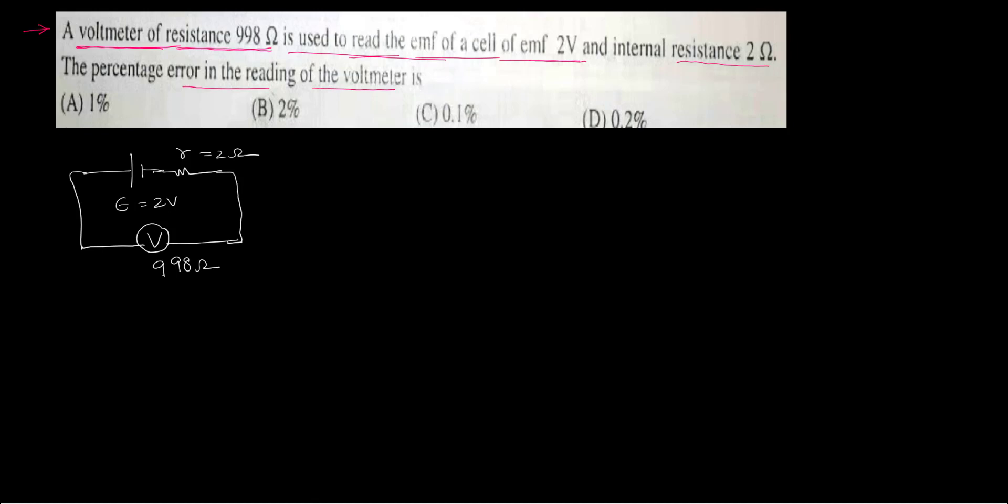So how does the current flow? Let us try to understand. From the positive plate, current will go this way via voltmeter, and then to the internal resistance, and then back to the negative plate of the battery. That means internal resistance is acting like a series resistance.